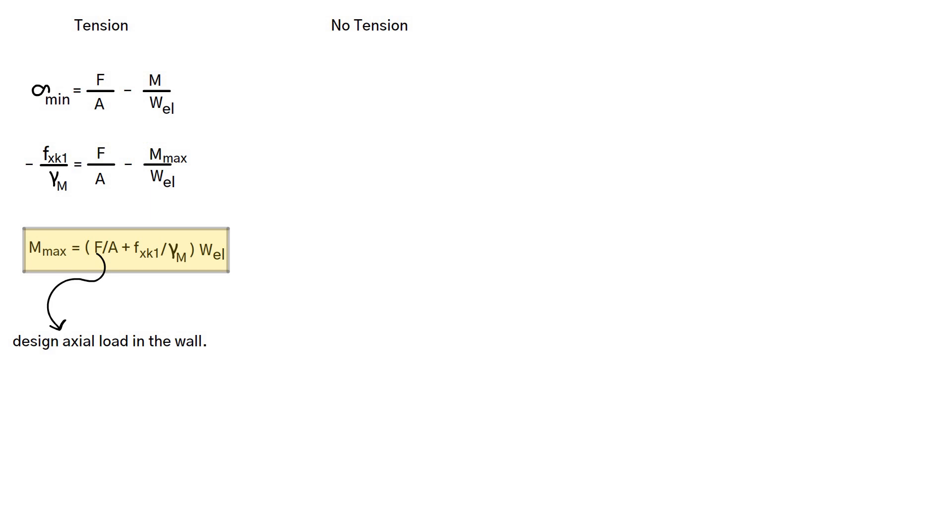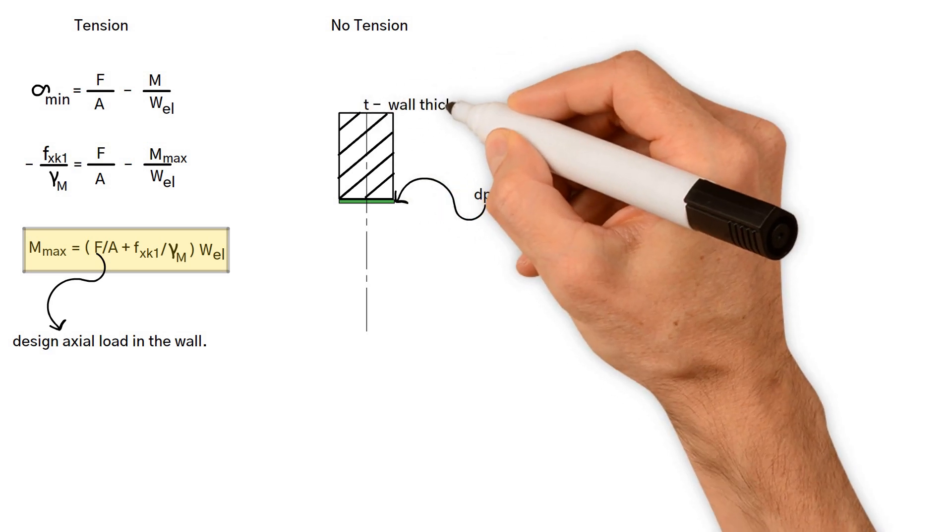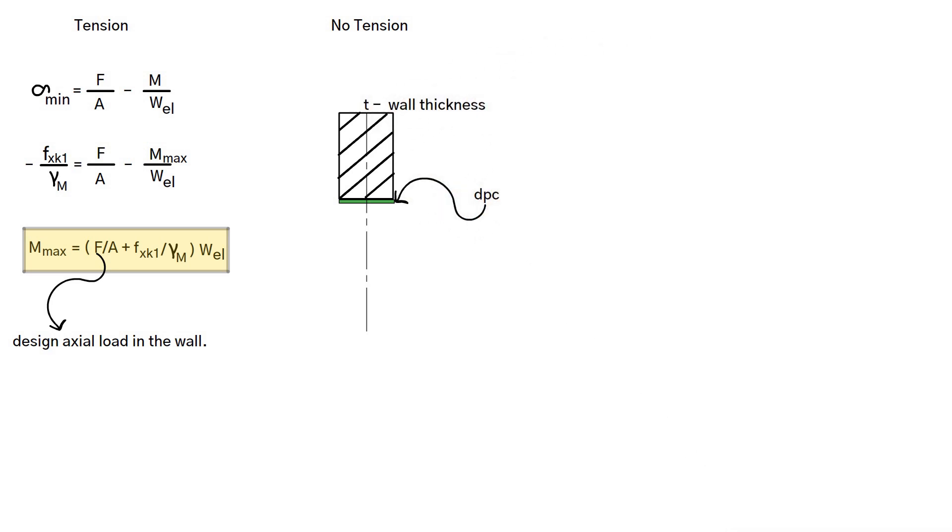Case 2: No tension case. If, because of a DPC, the bending tension must be zero, we can use vertical equilibrium to determine the limiting design moment on a wall of thickness. Masonry has the characteristic compressive strength of Fk.